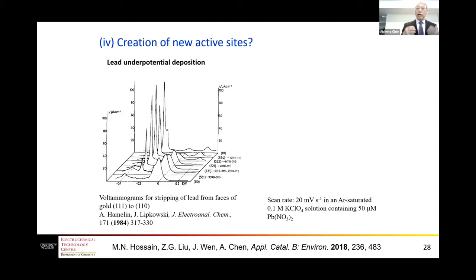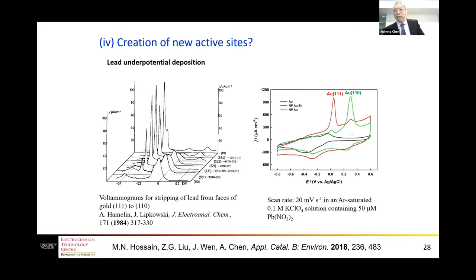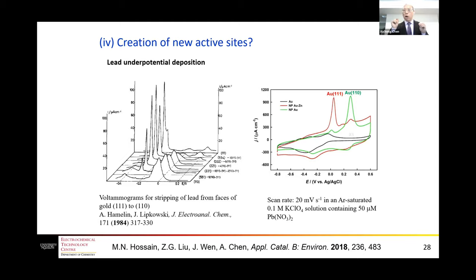To investigate whether new active sites are created during acid treatment, we used the lead underpotential deposition (UPD) approach, which is sensitive to surface structure. Comparing smooth gold, nanoporous gold-zinc, and nanoporous gold, we find that acid treatment creates new active sites corresponding to a Au(110) surface. From the literature, the Au(110) surface is known to be more active than other gold surfaces.